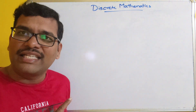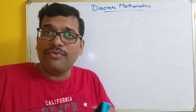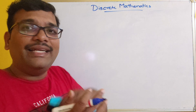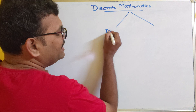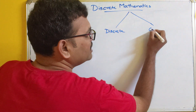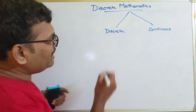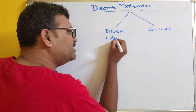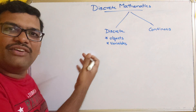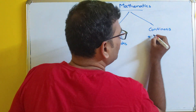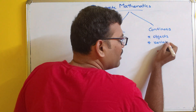Coming to the introduction of discrete mathematics — what is 'discrete'? Mathematics is divided into two ways: one is discrete and another is continuous. In discrete, we use discrete objects or discrete variables. In continuous, we use continuous objects or continuous variables.